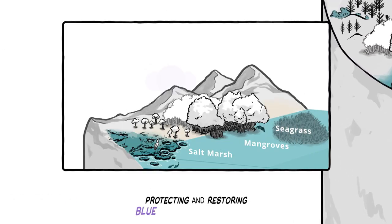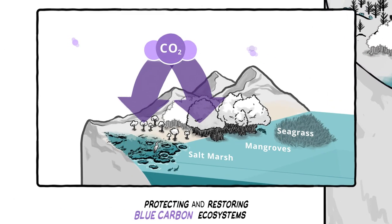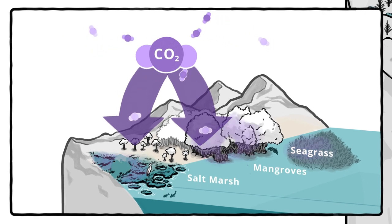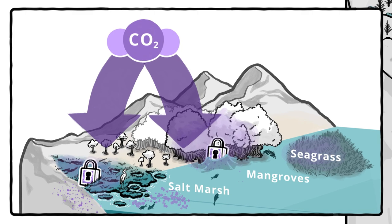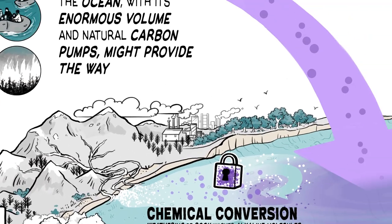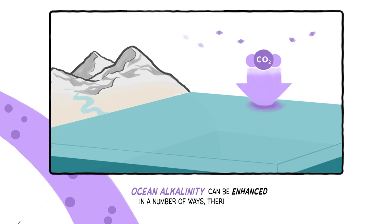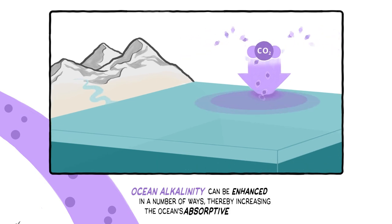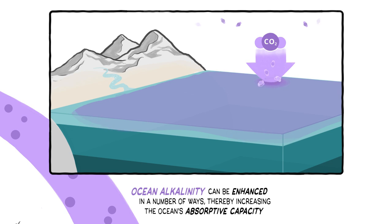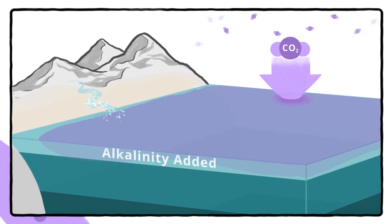Protecting and restoring blue-carbon ecosystems would prevent emissions associated with ecosystem degradation and can increase storage of organic carbon in marine soils. Ocean alkalinity can be enhanced in a number of ways, thereby increasing the ocean's absorptive capacity for CO2 and counteracting ocean acidification.